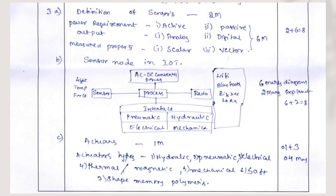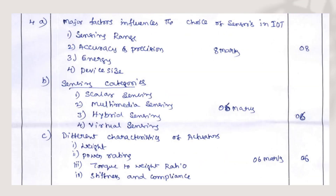The C question was: what is actuators and its types? Explanation of actuators is 1 mark. For the types, you list them out and write in one word what a hydraulic actuator is, what a pneumatic actuator is, what an electrical actuator is — that carries 4 marks. For the major factors influencing the choice of sensors: list down all the factors for 2 marks, then explain each factor in detail for 6 marks, totally covering 8 marks.